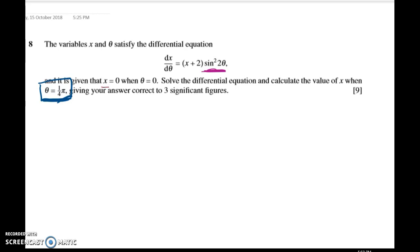So we're given that when theta is 0, x is equal to 0, and then we have to figure out the value of x when theta is equal to pi on 4. So let's start off in the usual way. If we separate the variables, here's what we get. Sin squared of 2 theta d theta.